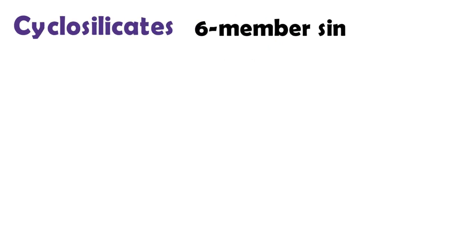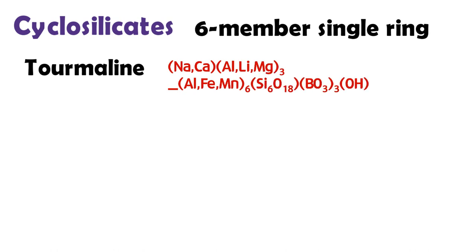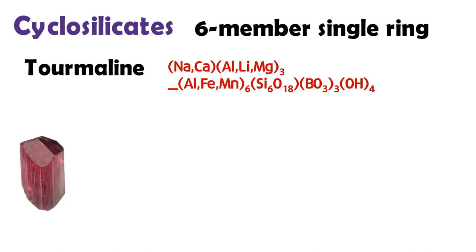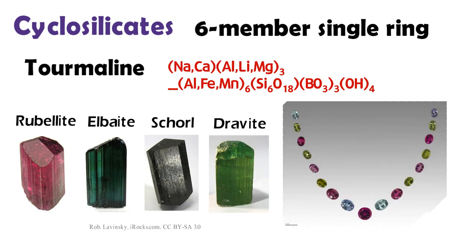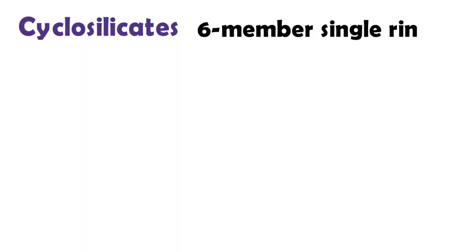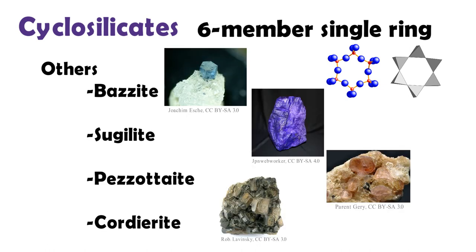As a cyclosilicate gemstone of six-member single ring, we know tourmaline. Tourmaline has various colors according to chemical composition. There are rubellite, elbaite, schorl, and dravite. If you want to learn more, you can see my tourmaline video in detail. Other cyclosilicate minerals having a six-member single ring are bazzite, sugilite, pezzottaite, and cordierite.